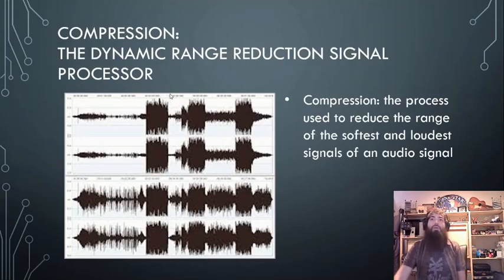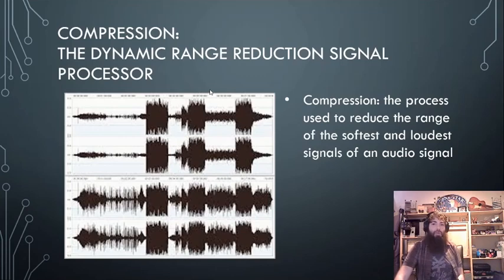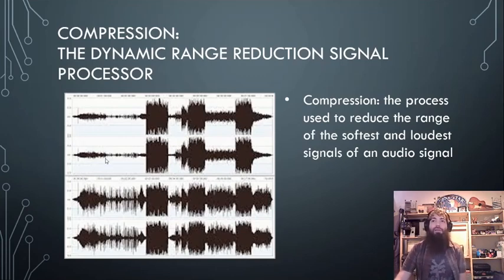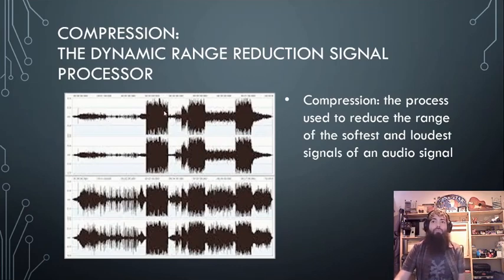Compression — the dynamic range reduction signal processor. What it's doing, as you can see here, we've got a signal with a lot of dynamic range: some soft parts, some loud parts. A compressor, however, is going to reduce that dynamic range.